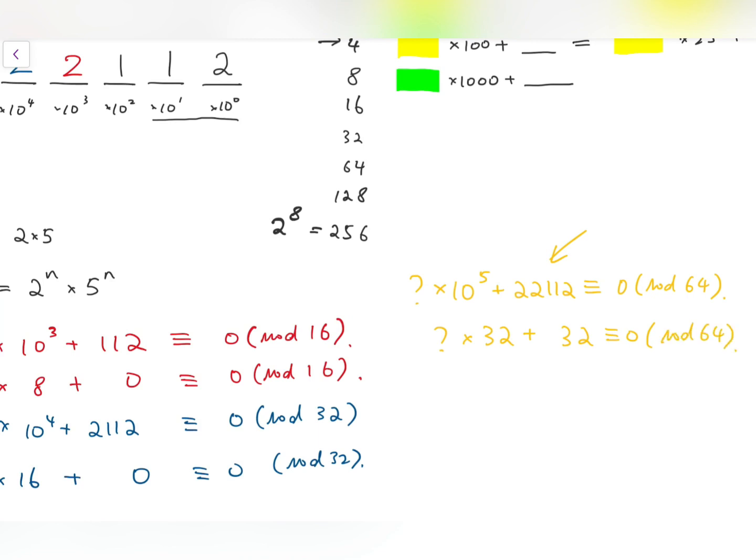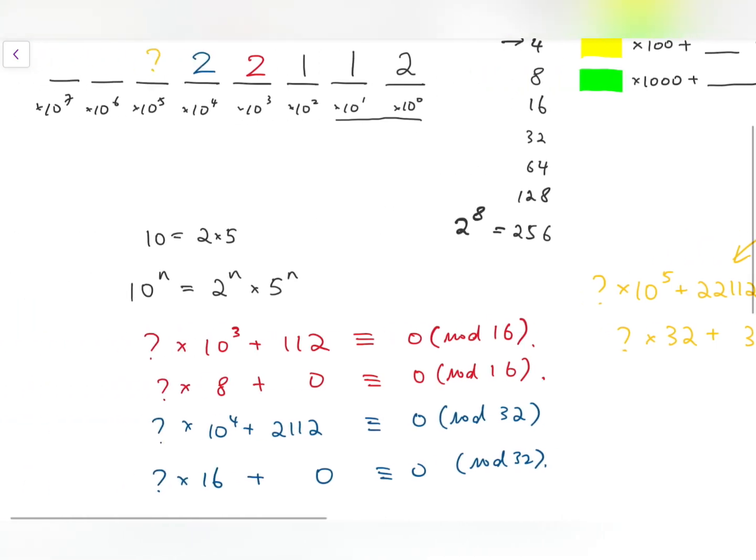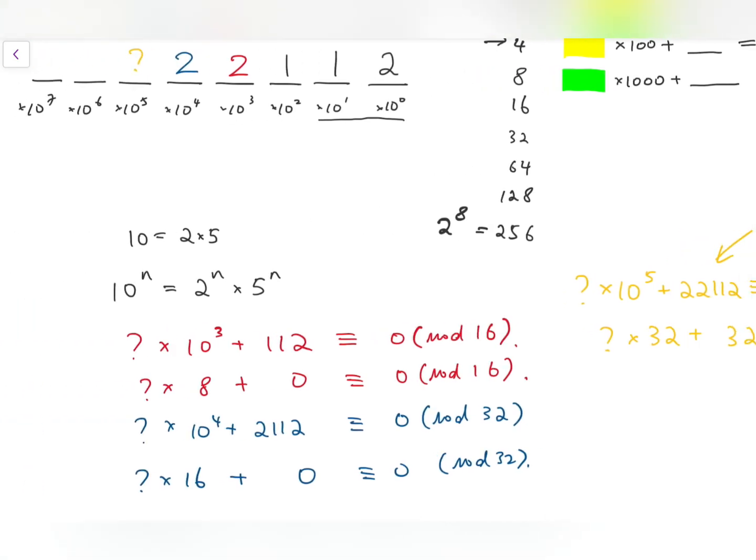Now for this, the orange question mark has to equal 1, so that 1 times 32 plus 32 is congruent to 0 mod 64. So we have 1 here.